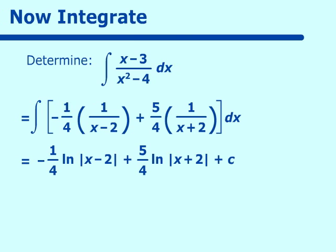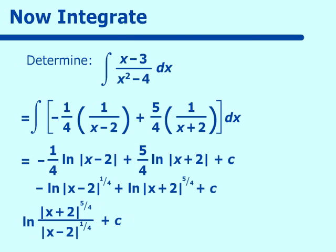We can simplify further: negative ln of |x minus 2| to the 1 fourth power, plus ln of |x plus 2| to the 5 fourths power, plus c. That becomes ln of |x plus 2| to the 5 fourths over |x minus 2| to the 1 fourth, plus c. One final form is 1 fourth ln of |x plus 2| to the fifth power over |x minus 2|, plus a constant. Both the expanded and division forms are acceptable.